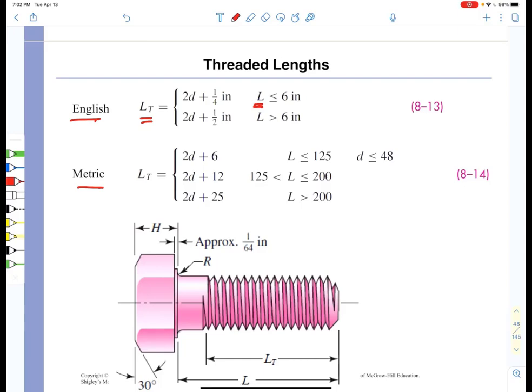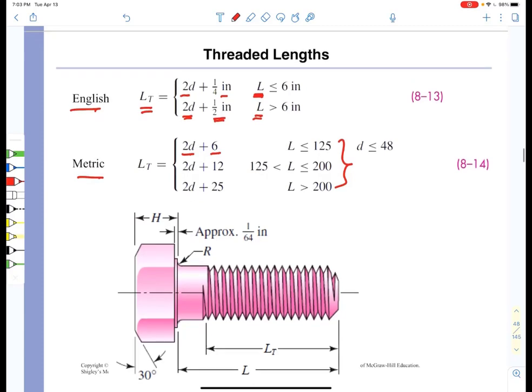there is a thread length in both the English and metric system that is standard for various bolts. The threaded length for a bolt of length L that is less than six inches is 2D + 1/4 inch, and if that overall length is greater than six inches the threaded length is 2D + 1/2 inch. For metric we have three different length categories all of which peg the thread length at 2D plus an offset. That is important as we move forward in estimating the overall spring stiffness of the bolts.